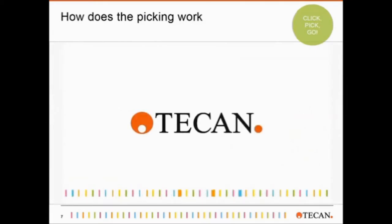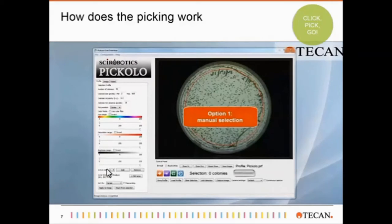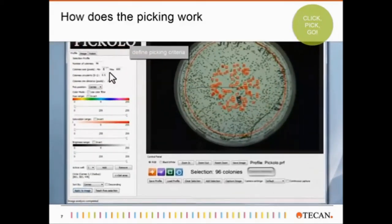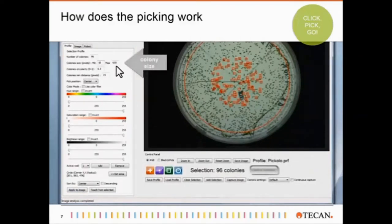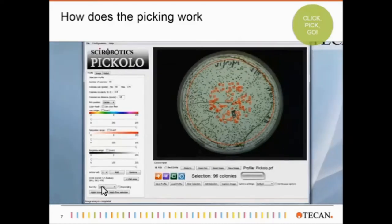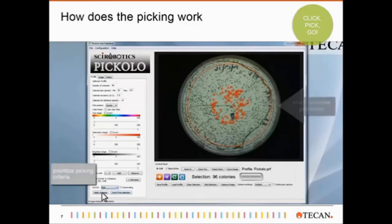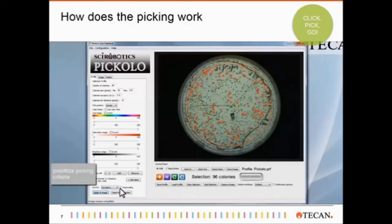So, how does automated colony picking work with Piccolo? I would like to show you a short video. It explains how one can select colonies in the software and shows how the actual picking is done. There are two options to select the colonies. First, manual selection, where all the parameters have to be entered manually, like colony size in pixels, circularity, distance to neighboring cells, and so on. Once applied, the software shows what colonies would be selected for picking, and then one can sort according to different preferences, like small colonies first, or ones located on the edges of the plate, or round colonies first.